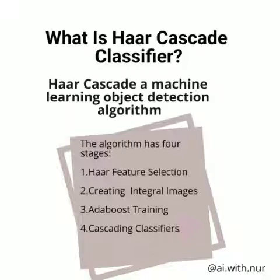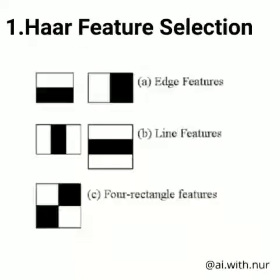The Haar Cascade algorithm is divided into four stages: first, Haar feature selection; second, integral image; third, AdaBoost training; fourth, cascade classifiers. Let's go with the first stage, Haar feature selection.